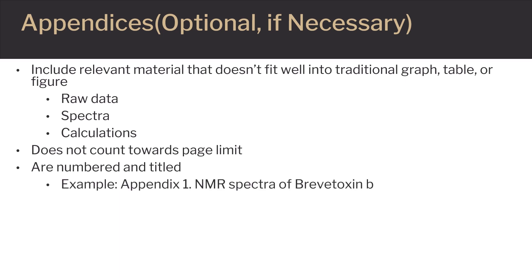For example, the first appendix should be labeled as Appendix 1, followed by the title of that appendix. The title should tell the reader what is in that appendix. The appendices should be referred to in the text of the report as well.